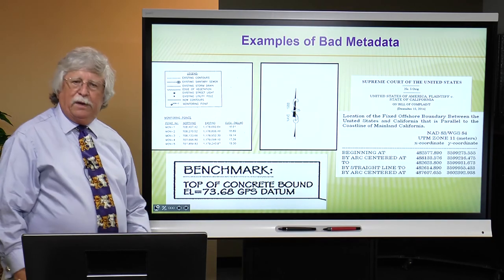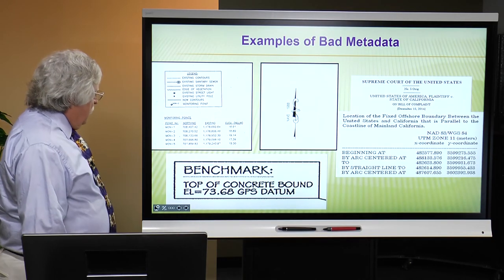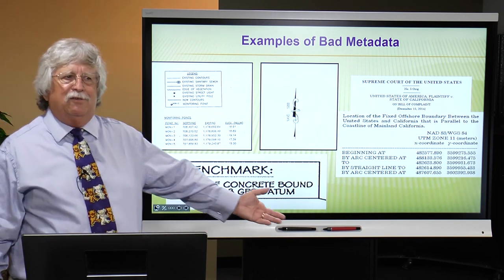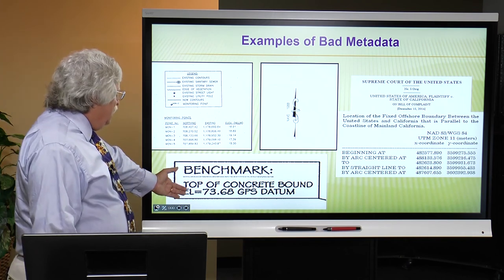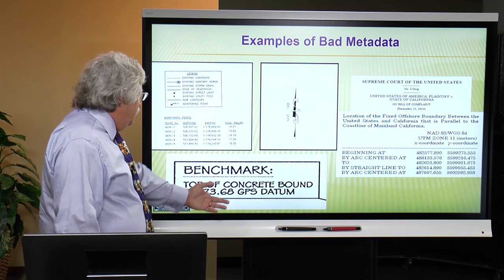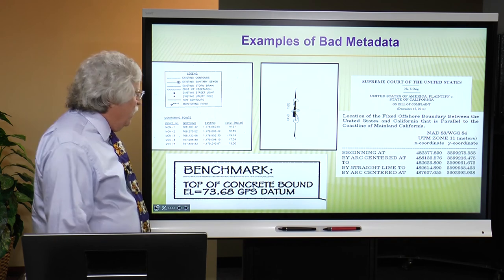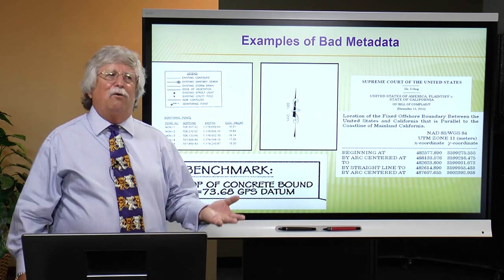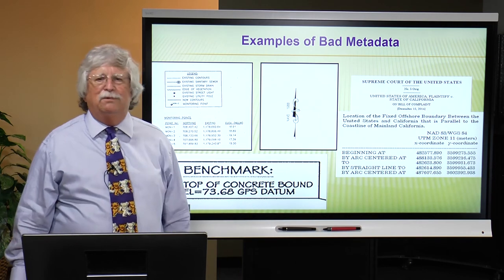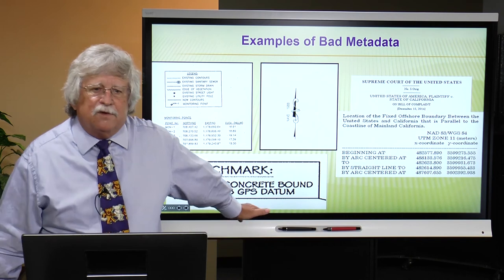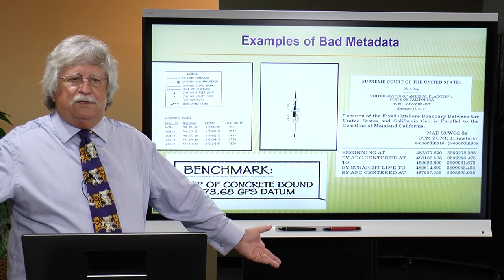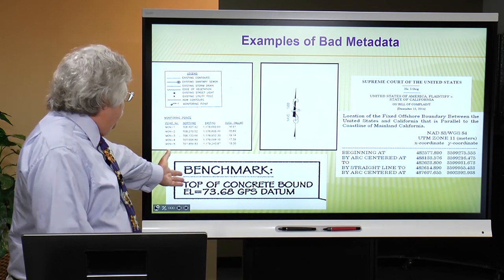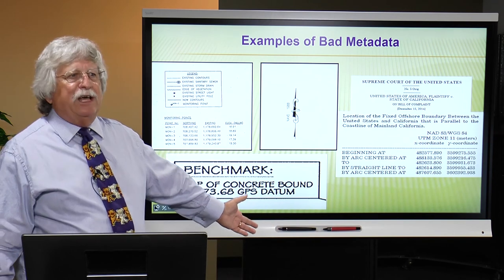Here's one picked off a plat from a surveyor — it says 'Top of the concrete bound, elevation is 73.68 GPS datum.' Right away that tells me it's probably somebody in New England because they refer to their monuments as bounds. But 73.68 what? Meters? Feet? The surveyor should say that. And what does 'GPS datum' mean? Is that an ellipsoid height? My geodesy background says GPS datum means ellipsoid height, not an orthometric height — but you don't want to leave that ambiguous.